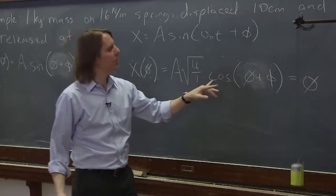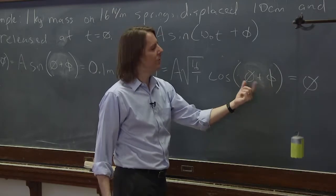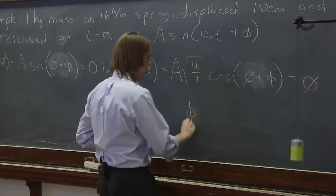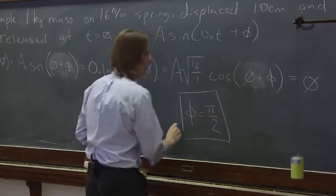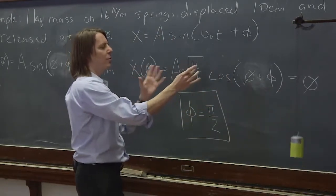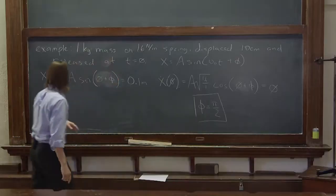So the cosine term has to end up being zero. Where is cosine zero? Cosine is zero when the argument is pi over two. So this requires that the phase be pi over two. Even though this has two of the terms in it, this allows us to solve for one of them because the amplitude can't be zero. So now we know phi has to be pi over two.